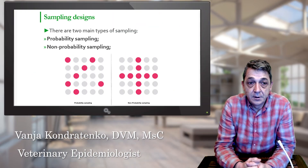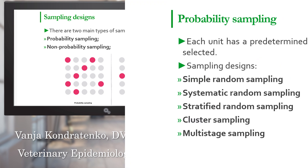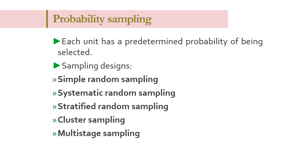There are two main types of sampling: probability sampling and non-probability sampling. In probability sampling, each unit — which could be animal, farm or village — has a predetermined probability of being selected. The selection is based on a formal randomizing procedure from the sampling frame. The following sampling designs and formulas for calculating sample size will be described in this chapter: simple random sampling, systematic random sampling, stratified random sampling, cluster sampling and multistage sampling.